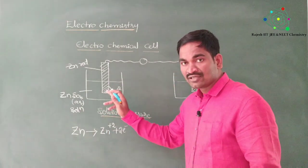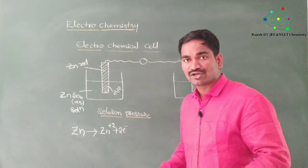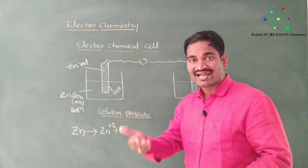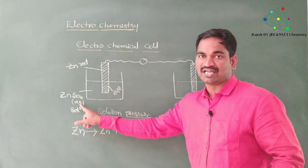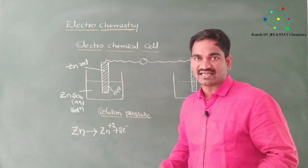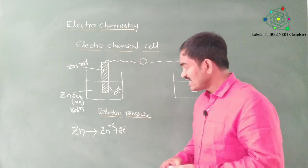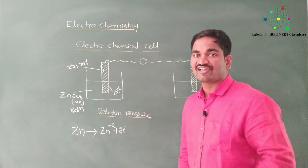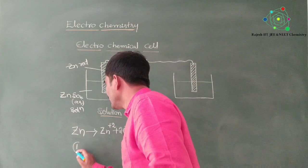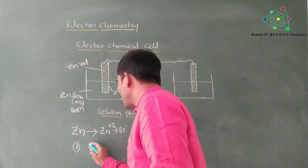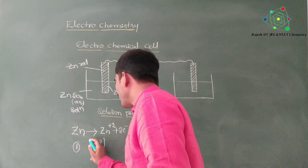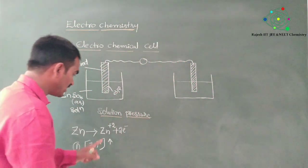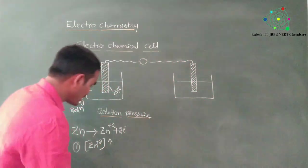Here, solution pressure is generating. What is meant by solution pressure? From the electrode, neutral atoms are converting into ions, and those ions are entering into the ionic solution — that tendency is considered solution pressure. Due to solution pressure, two things happen: first, the Zn²⁺ concentration in the solution increases.